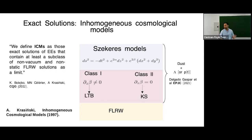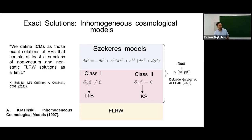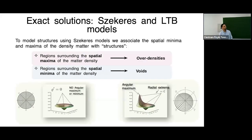The source of these Szekeres models is irrotational dust — no pressure. We can add pressure, but the conservation of the energy-momentum tensor imposes significant restrictions, so in practice the pressure reduces to the cosmological constant. The question then is how to model cosmological structure with exact solutions, given that they have many symmetries and quasi-symmetries needed to integrate Einstein's equations.